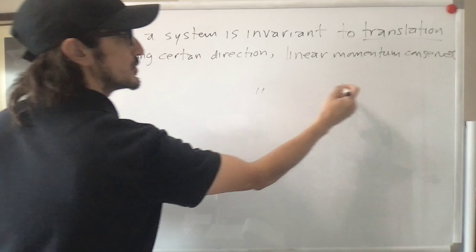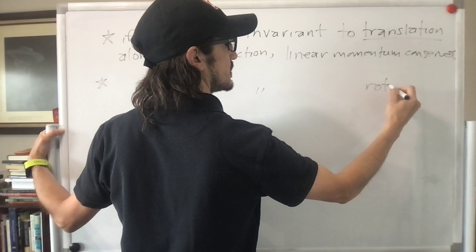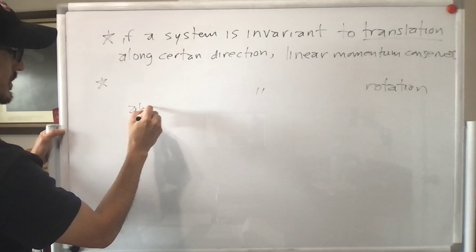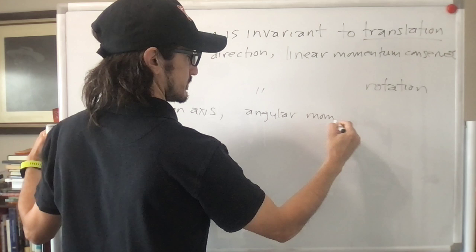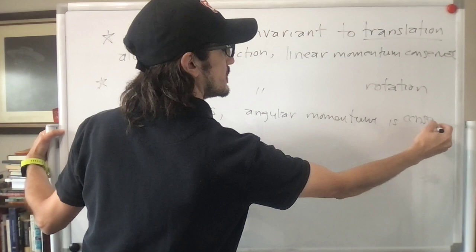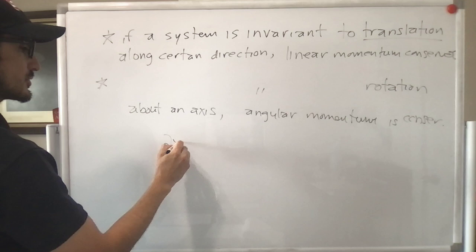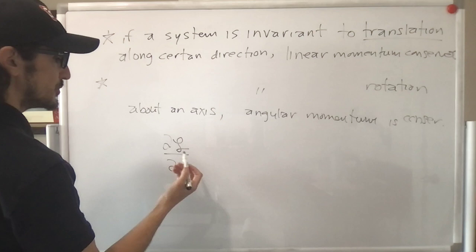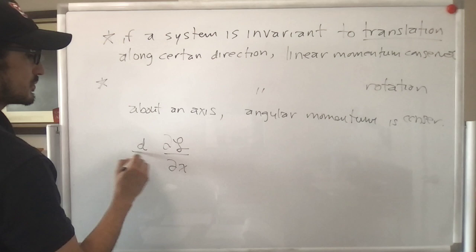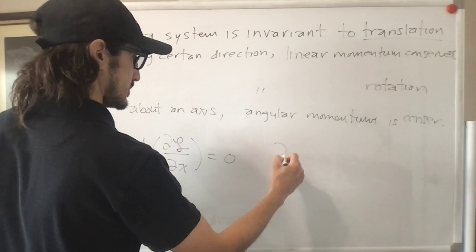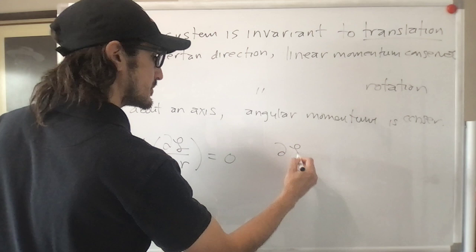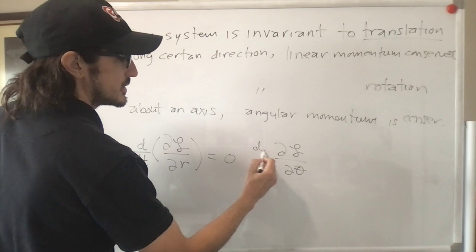If the system is invariant to rotation about an axis, then angular momentum is conserved. Mathematically, this was the partial derivative of the Lagrangian with respect to q — for example x — and the derivative with respect to time of this is zero. For angular momentum, the partial derivative of the Lagrangian with respect to the angle theta, and the derivative with respect to time of that equals zero.